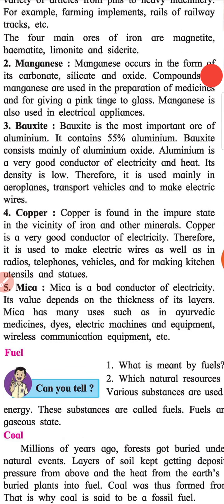Copper is found in the impure state in the vicinity of iron and other minerals. Copper is a very good conductor of electricity. Therefore, it is used to make electric wires as well as in radios, telephones, vehicles, and for making kitchen utensils and statues.